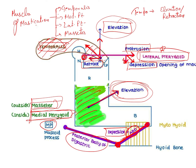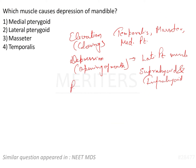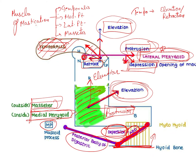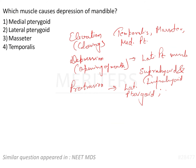The lateral pterygoid depresses the mandible, and depression also involves the suprahyoid and infrahyoid muscles. For protrusion, one vector component is towards the elevation side and another towards the protrusion side. Protrusion is mainly performed by the lateral pterygoid, but there is some contribution from the medial pterygoid on the inside and the masseter on the outside. So protrusion involves lateral pterygoid, medial pterygoid, and masseter.